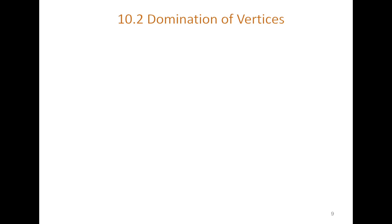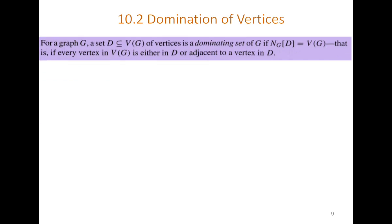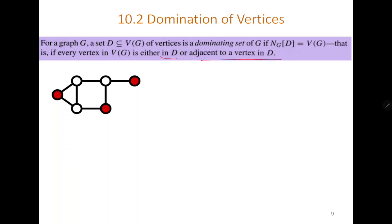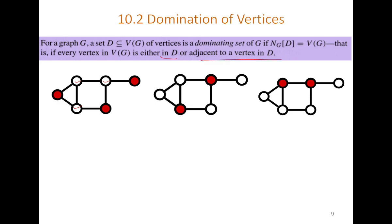The next concept is domination of vertices. A subset of vertices D is a dominating set if that set along with all of its neighbors forms the complete vertex set — i.e., every vertex in V is either in D or is adjacent to a vertex in D. Here, three red vertices form a dominating set because the remaining vertices are each adjacent to at least one of the red vertices.